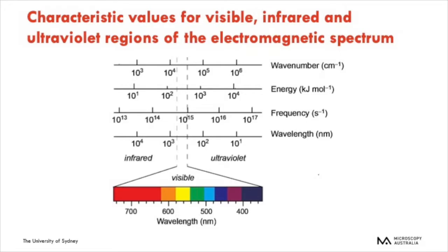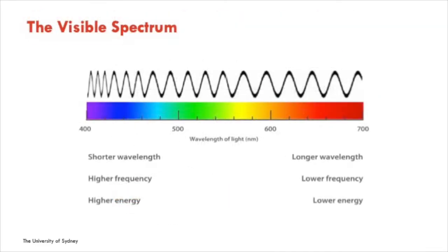As a biological microscopist, the most important function we use is wavelength. If you're a physicist, you would be very interested in frequency. The energy is also extremely interesting to us because at the UV area we have much higher energy. This is important because if you're putting that energy into your sample, you're possibly causing bond breaks if you're putting in too much light.